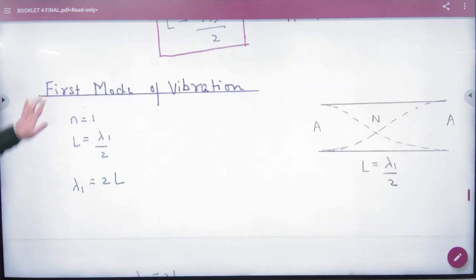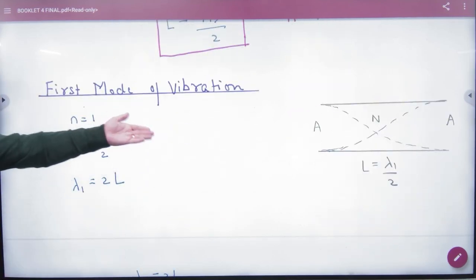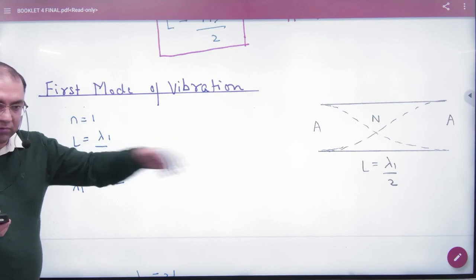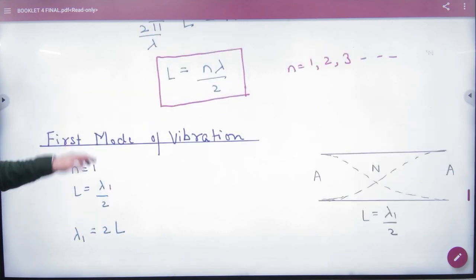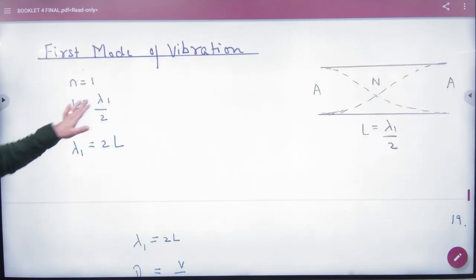L. First mode of vibration. First time, he has shown the diagram. How will the graph make it? The graph is proper. Without math, he has shown it right. Mathematically, n to 1, L to lambda by 2.